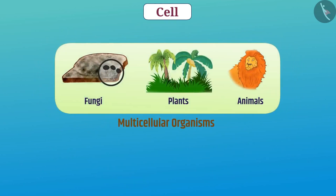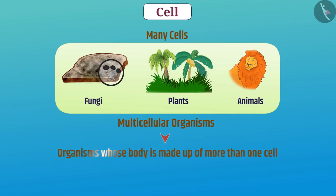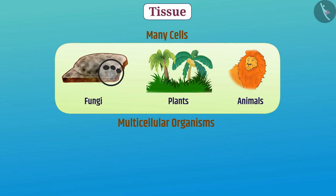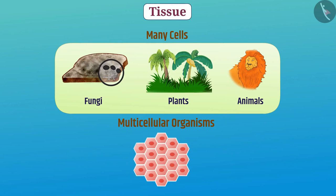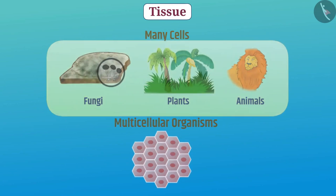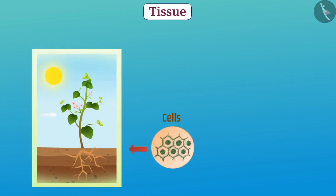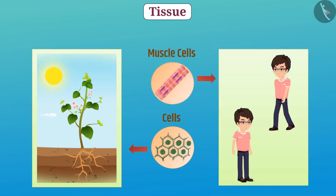In other organisms, many cells combine to form one organism. Organisms whose body is made up of more than one cell are called multicellular organisms. In such organisms, cells form different groups, in which each group performs a specific function. For example, in plants, the cells of conducting vessels transport food and water from one place to another. In humans, the muscle cells contract and relax.